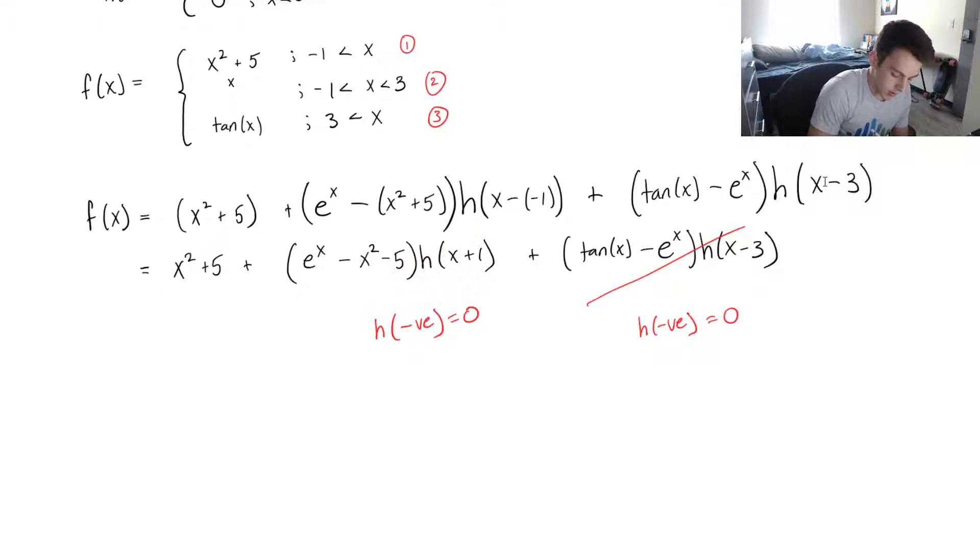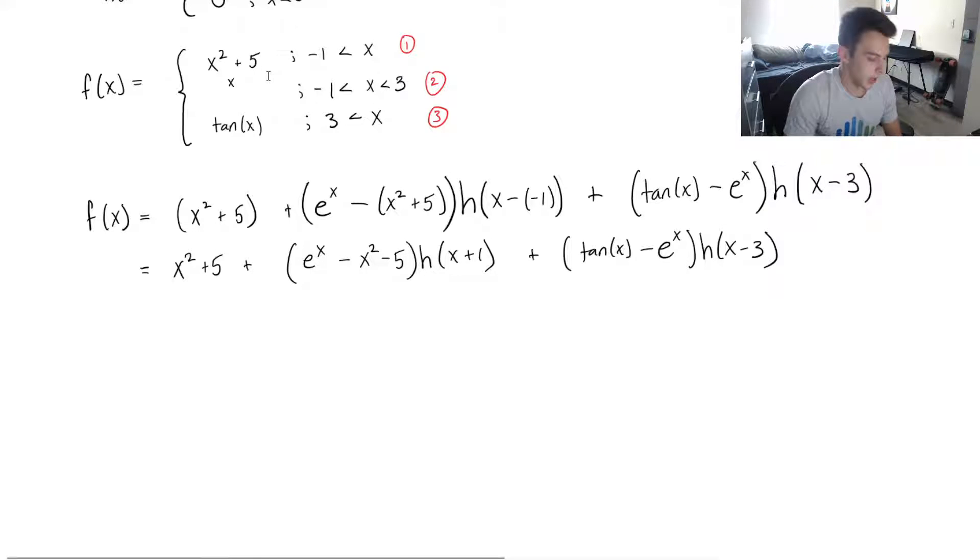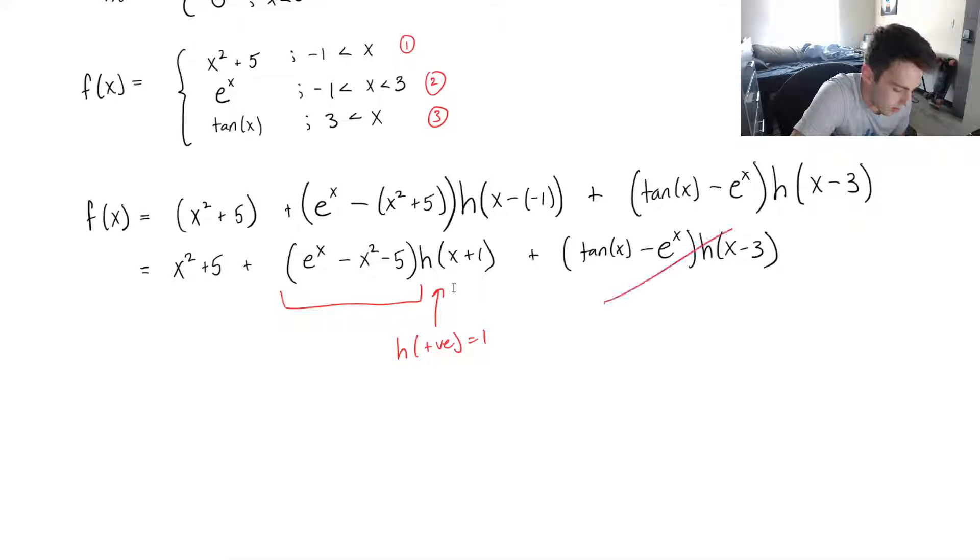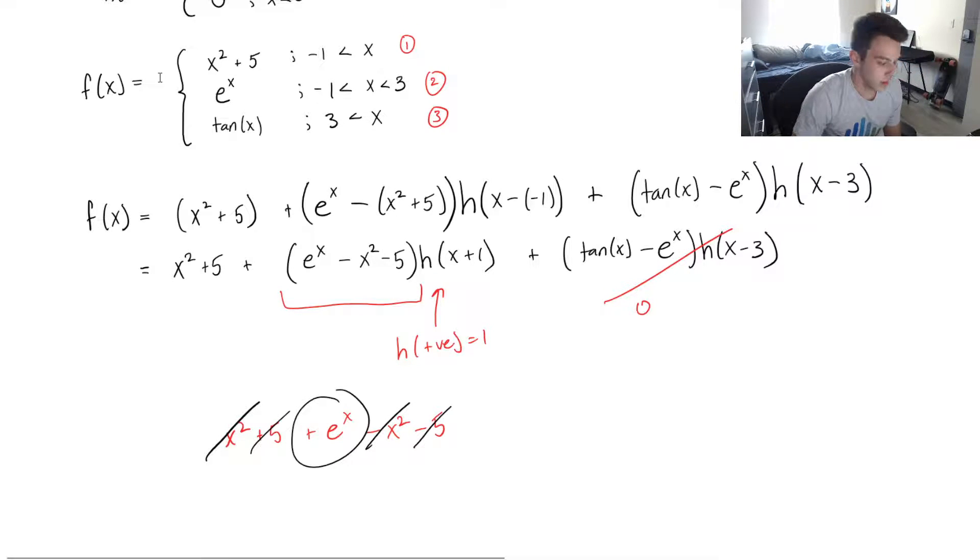Let's do the same thing now for the other two. So I'm gonna pick a value of x that's in my second region, okay, and that would be zero. Let's take zero. So h of zero, right here, h of zero, that's going to be positive, which means this is going to be one. So this term is going to stay. But if I've got zero minus three, this term is going to be zero. So now I've got x squared plus five plus e to the x minus x squared minus five, and you can see I'm left with e to the x. Solid, that's what I wanted.